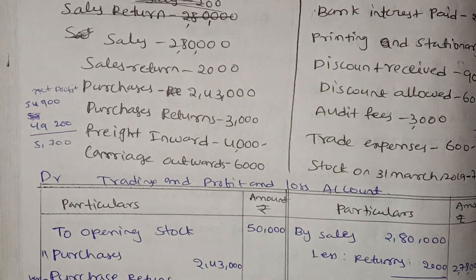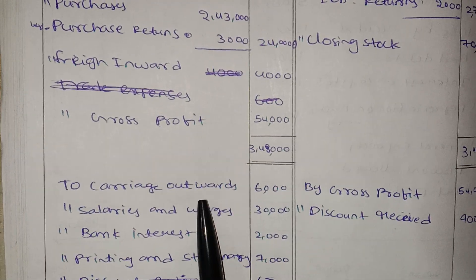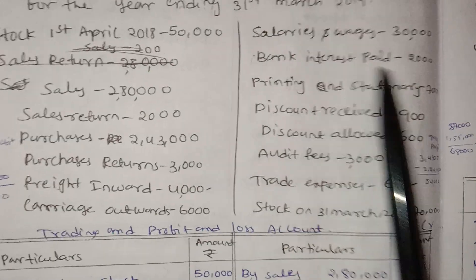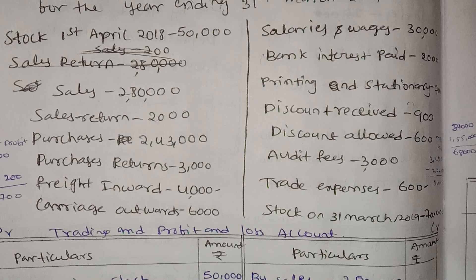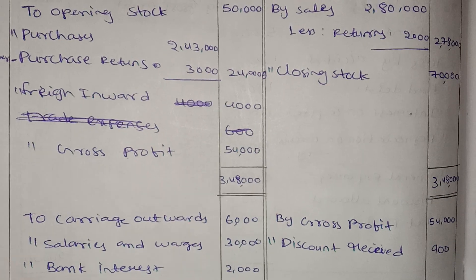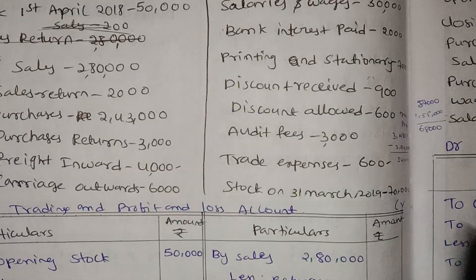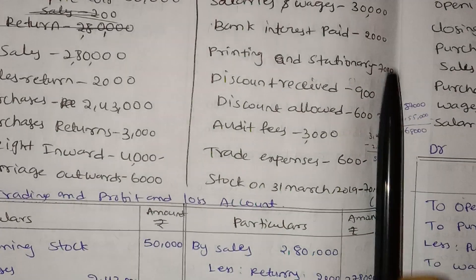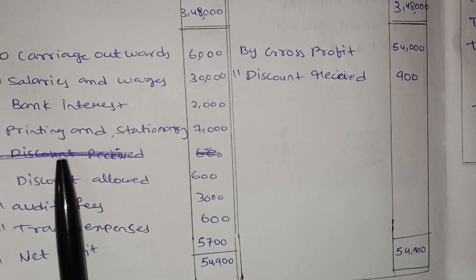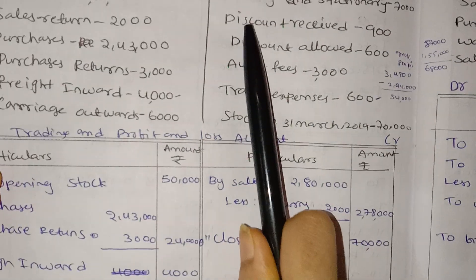Next: carriage outwards and indirect expenses. Next: salaries and wages. Next: bank interest paid — $20,000; this is an indirect expense. Next: printing and stationery — $7,000.